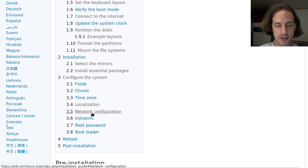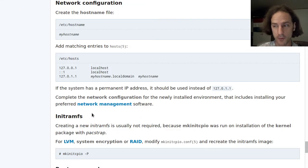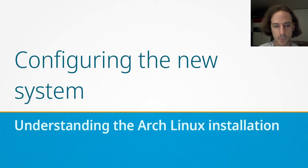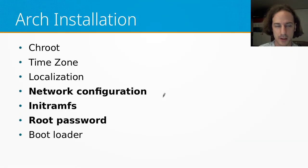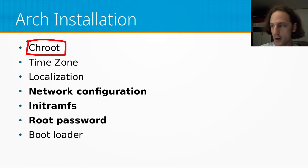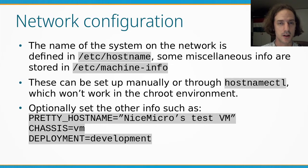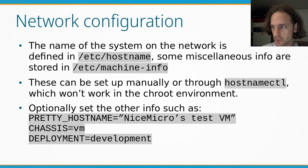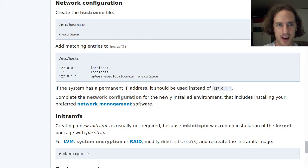In our last video we finished localizing our system, so let's jump to the network configuration. We are continuing with the system config — we already did the chroot environment, we already installed the basic packages, and we can move around in our system. Let's get into the main part of today's video: the network configuration. On the ArchWiki installation guide there is only the minimum setup you should be doing.